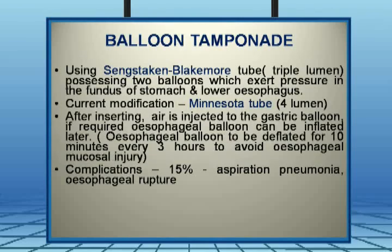Balloon tamponade uses the Sengstaken-Blakemore tube, a triple-lumen tube, or the Minnesota tube, a four-lumen modification. Air is injected into the gastric balloon first; if required, the esophageal balloon is then inflated. These inflated balloons apply pressure to reduce bleeding. Complications include aspiration pneumonia and rupture of the esophagus.